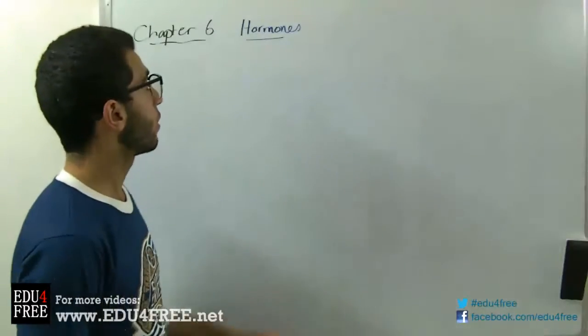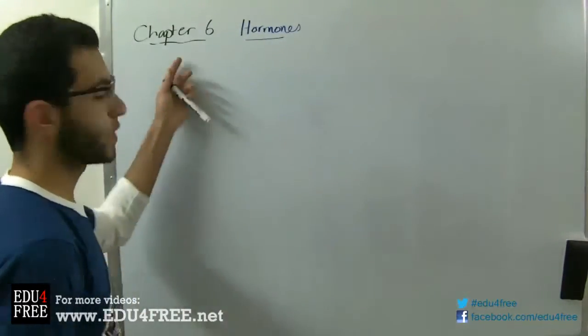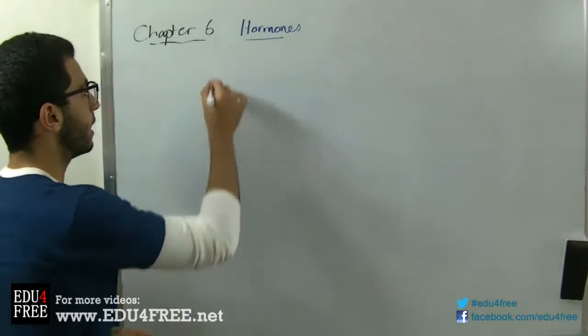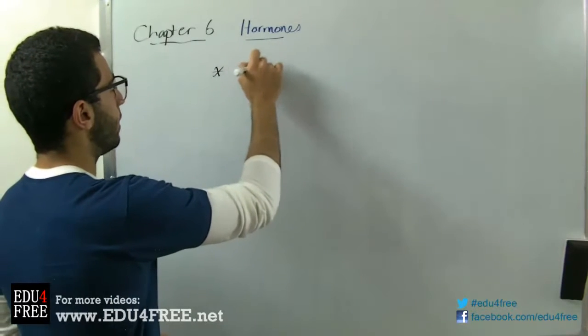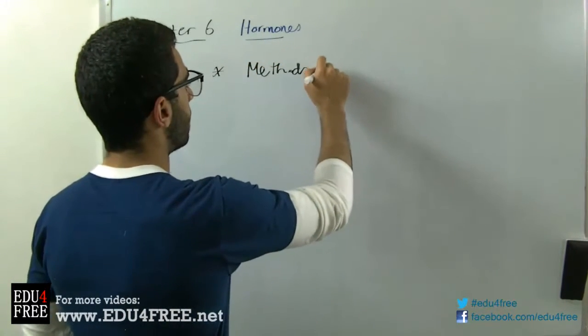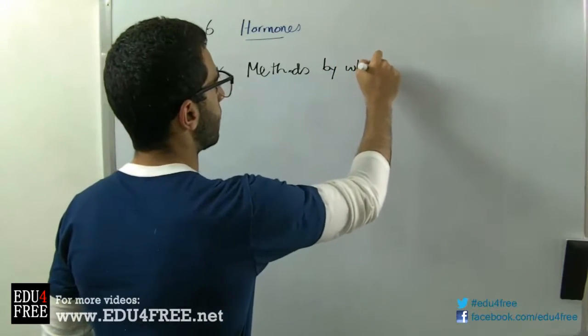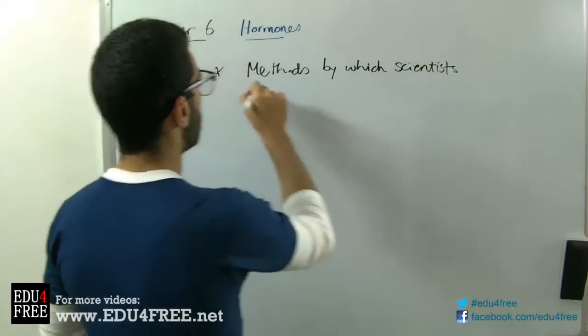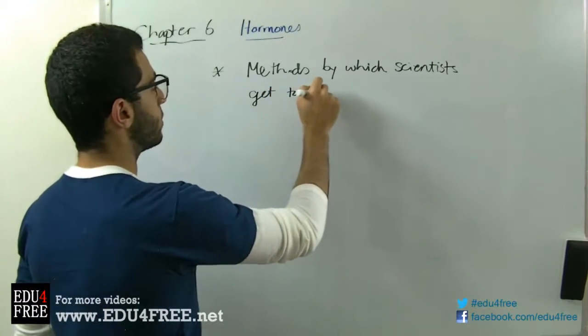We are still talking about hormones in the introduction of Chapter 6. We have three points that we are going to talk about today. These are the methods by which scientists get to know the function of hormones.